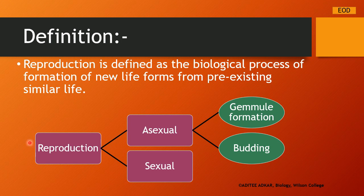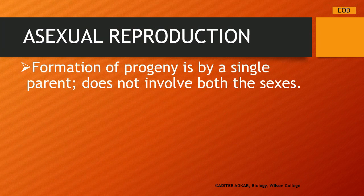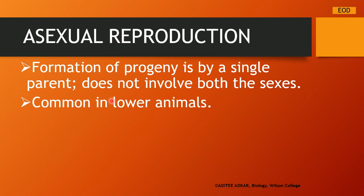Let us begin by understanding what is asexual reproduction. As the name itself suggests, asexual means there will be no two sexes involved — it does not involve both the sexes. The formation of the offspring or the progeny is by a single parent only. This kind of reproduction is commonly seen in lower animals, which generally means the non-chordates and the lower classes of chordates.